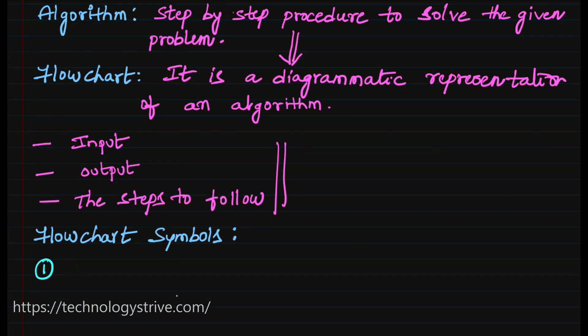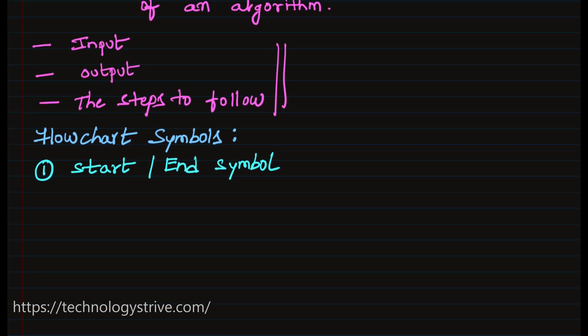Every algorithm will have some start point and end point. We are going to start at this point and then we have to end at this point. Every algorithm will have a terminator. That's the reason this start or end symbol is also called a terminator symbol. We will use an oval shape or rounded rectangle shape to represent the start or end.